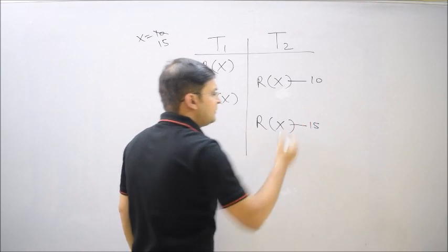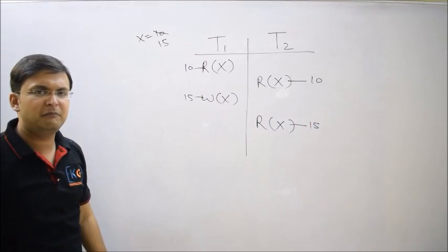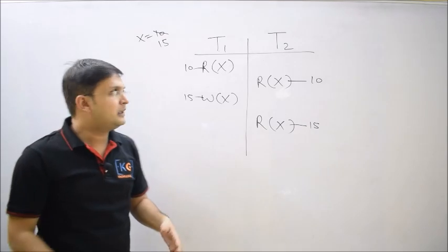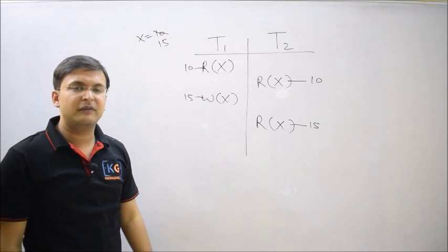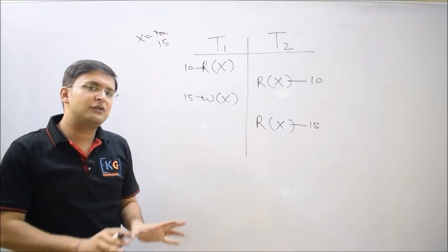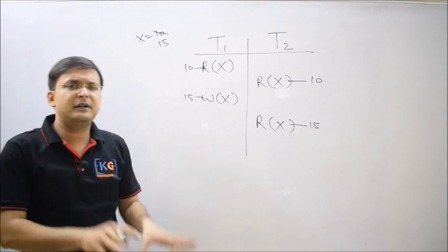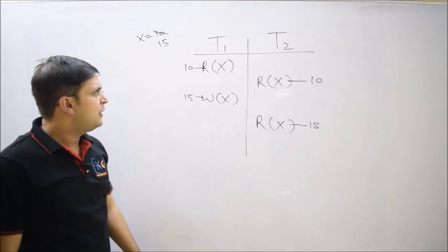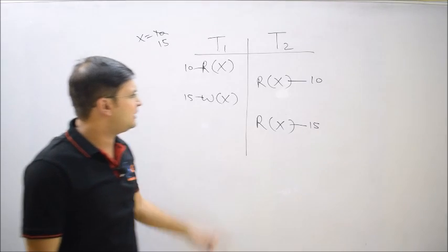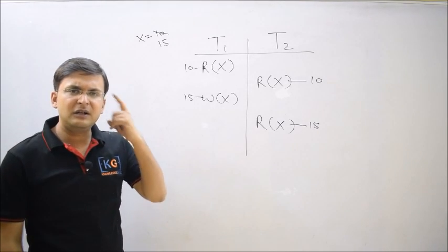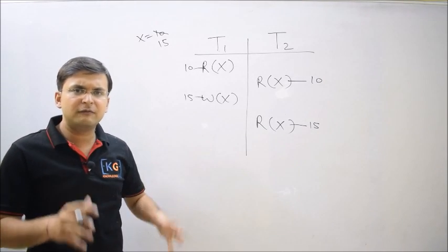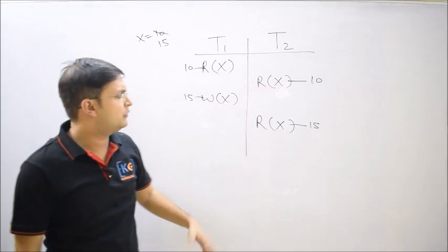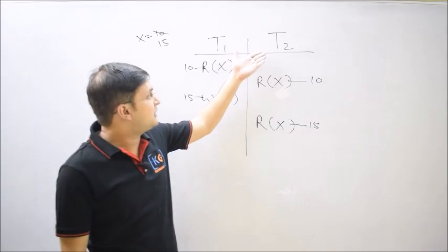When transaction T2 repeats its read, this time the value has changed to 15, because both transactions are using the same copy in the buffer, and the value has already been changed to 15. Although the value has not been updated into the database yet, the current value in the buffer is 15. Now when transaction T2 reads 15, it goes into confusion.